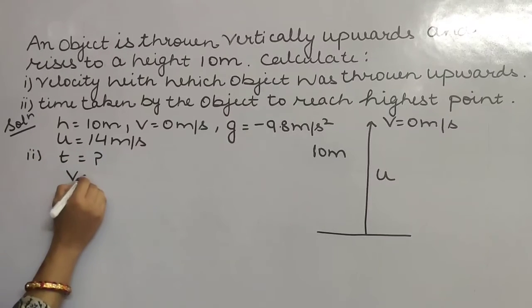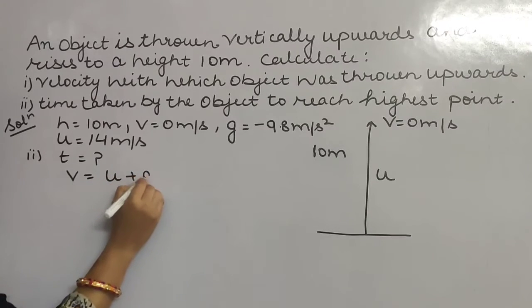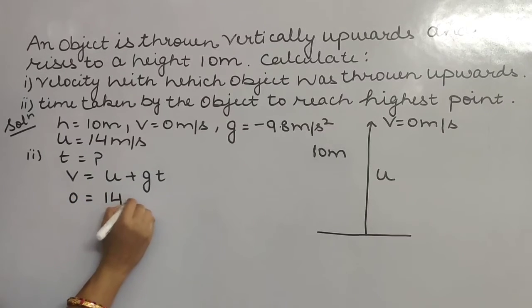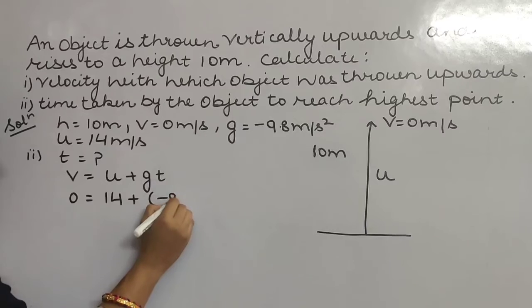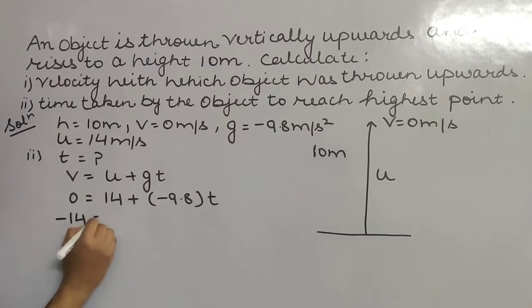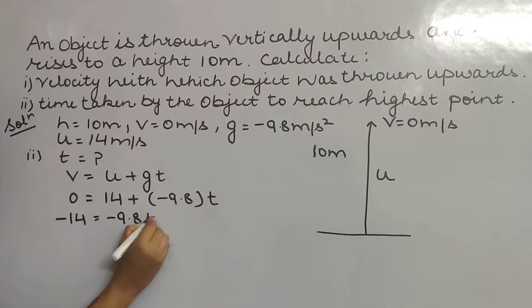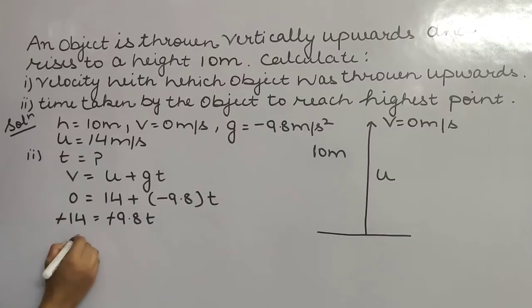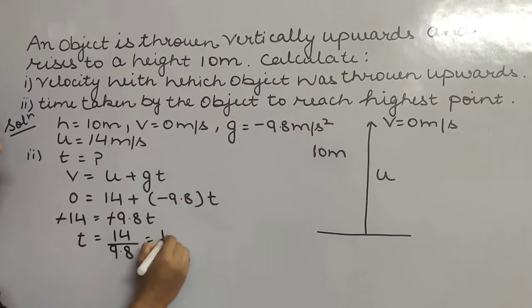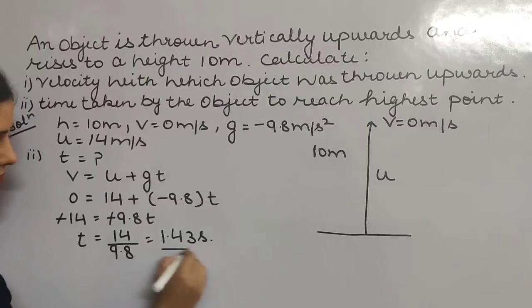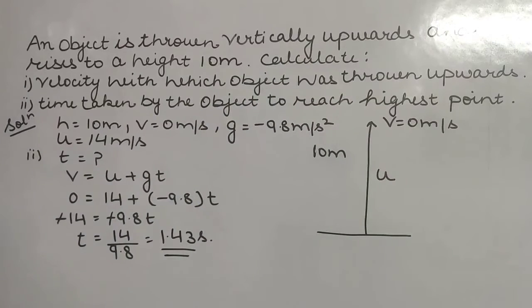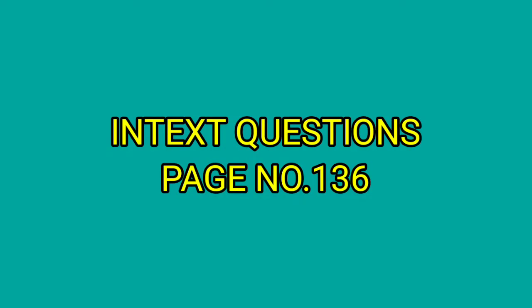0 = 14 + (-9.8)t, so -14 = -9.8t. Minus and minus cancel out. Time will be 14 divided by 9.8, that is 1.43 seconds. So this is the time taken by the object to reach the highest point.